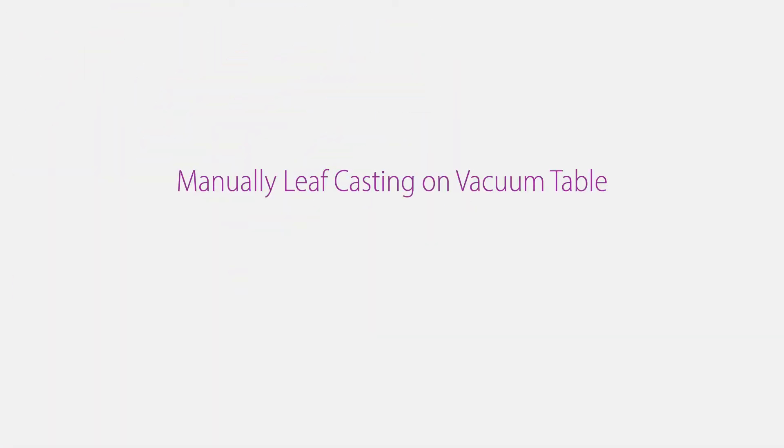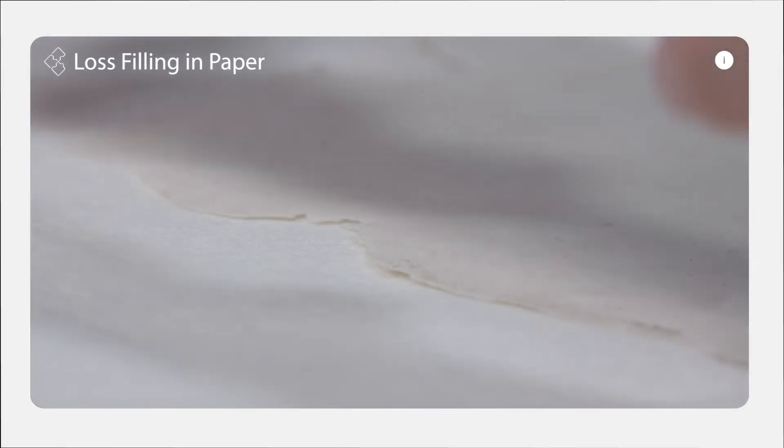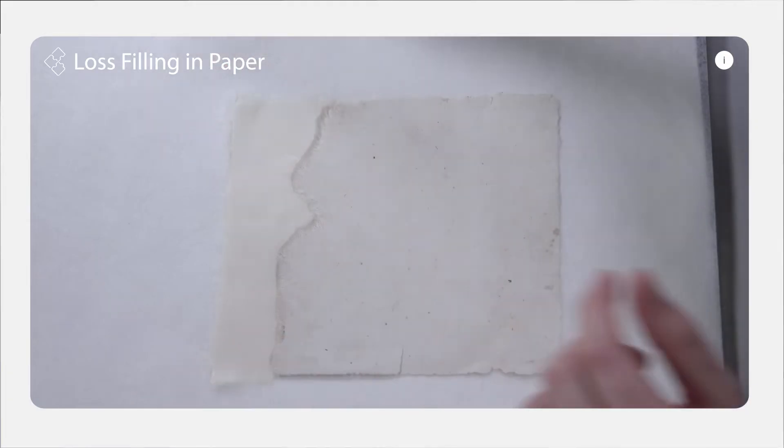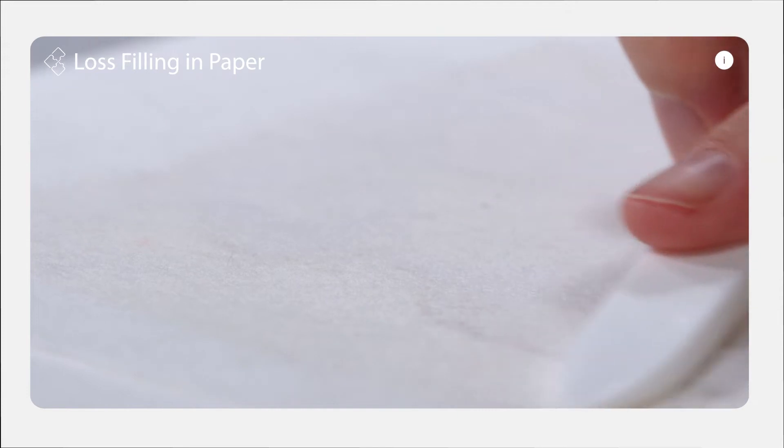This video is about manually leaf casting paper on a vacuum table. It shows the preparation involved and how the process is carried out. Paper leaf casting is a way of infilling losses. You can find out more about loss infilling in this video.